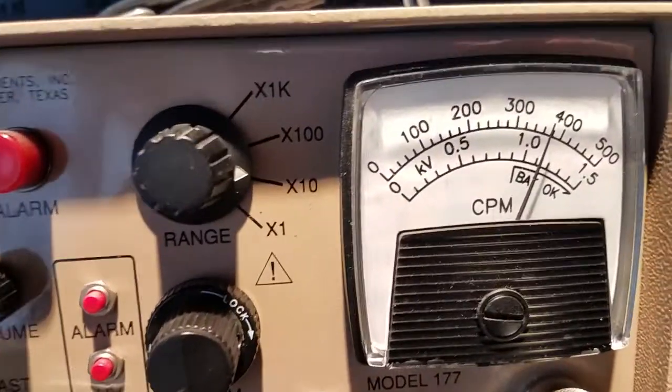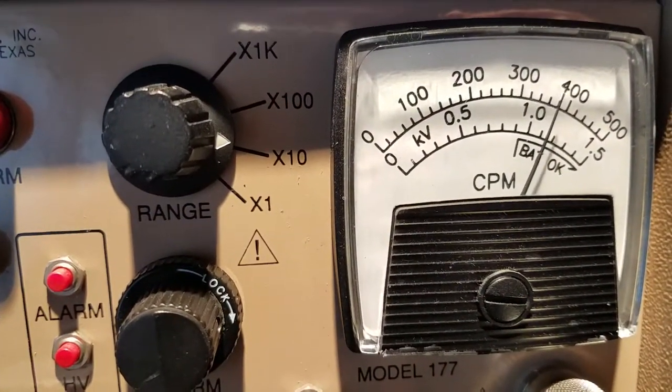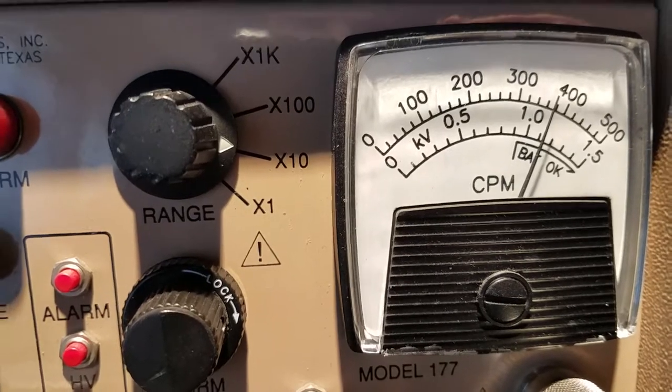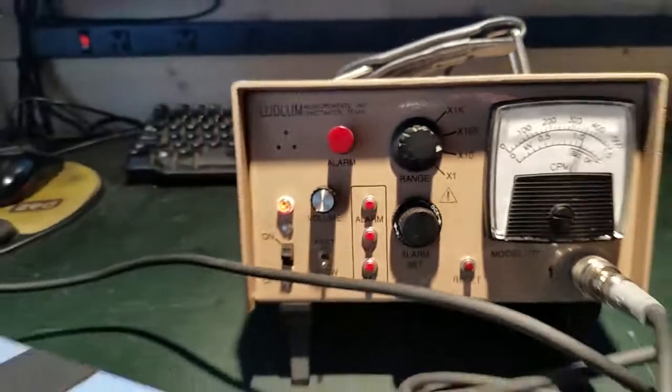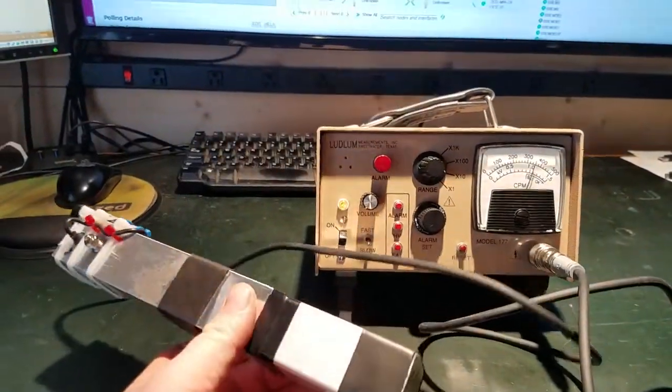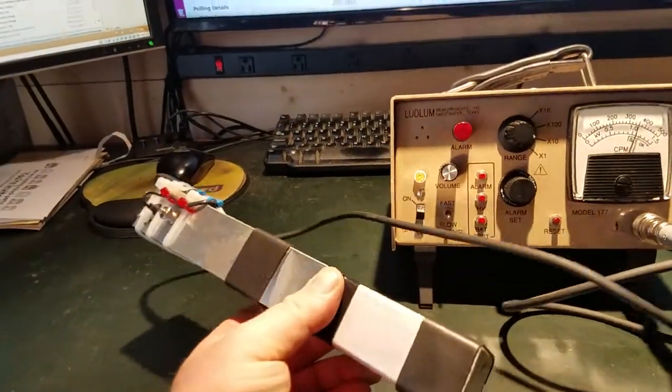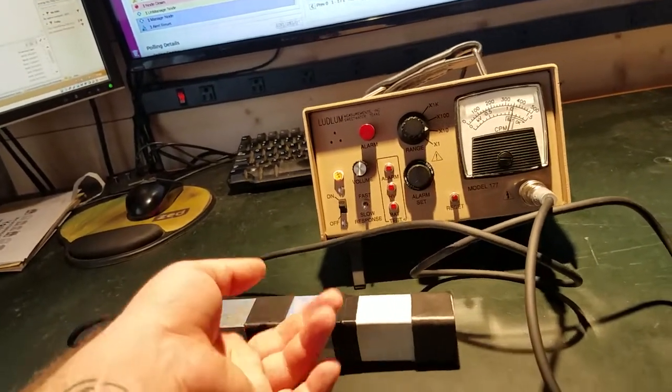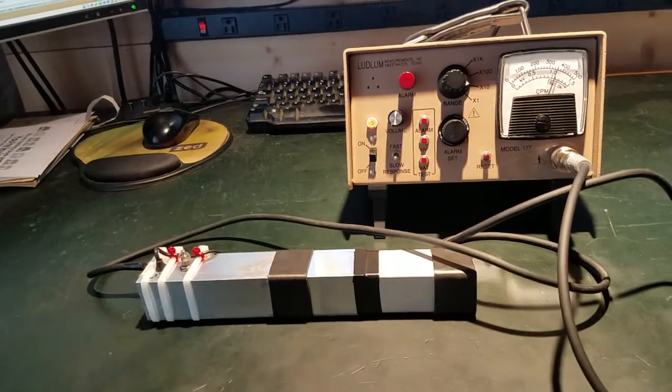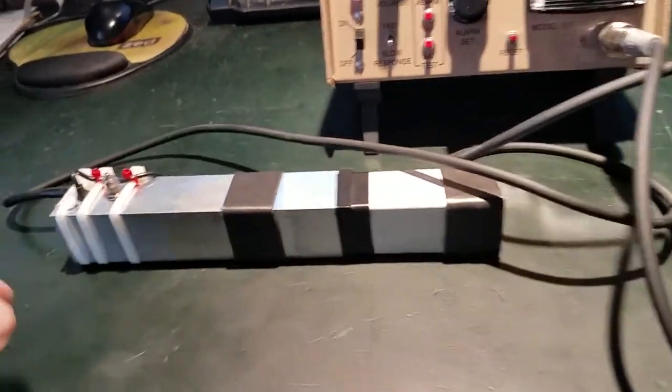As you can see here, it's picking up shy of 4,000 counts per minute. But the reason for that being that I actually have a bunch of my stronger samples in the room with me, and it's actually picking them up nearby. Normally I get about 3,200 counts a minute on this thing.